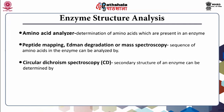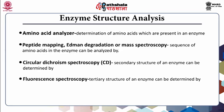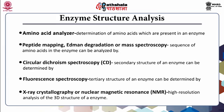The secondary structure of an enzyme can be determined by circular dichroism spectroscopy (CD). The tertiary structure can be determined by fluorescence spectroscopy. X-ray crystallography or nuclear magnetic resonance (NMR) analysis can be used to obtain a high-resolution analysis of the 3D structure of an enzyme.